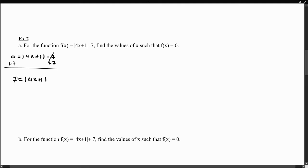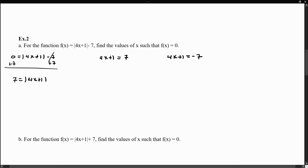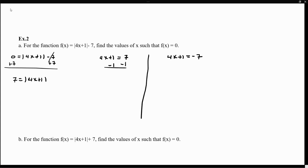Now the absolute value expression is isolated and equals 7. Just like in the previous example, once the absolute value is isolated, we set the inside — which is 4x plus 1 — equal to positive 7, and also equal to negative 7. For the left equation, we subtract 1 from both sides: 4x equals 6, and dividing by 4 gives x equals 6 over 4. That's one solution.